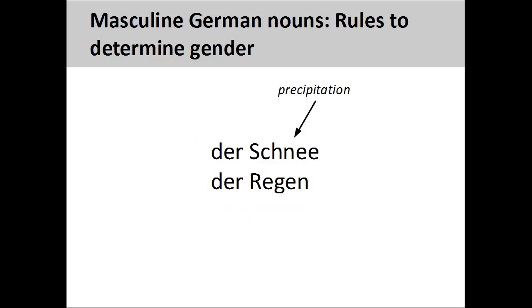Forms of precipitation, such as 'Schnee' (snow) and 'Regen' (rain), are masculine nouns.